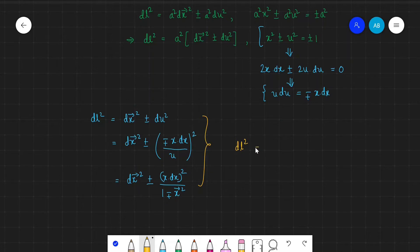So we write dl² — oh wait, we missed one thing. All of this part is multiplied by a², so we should write a² here and here and also here.